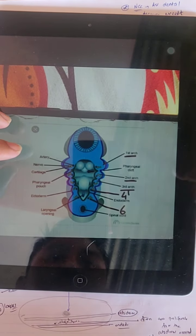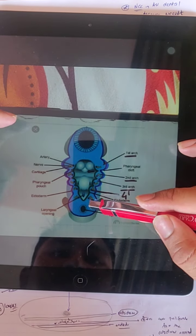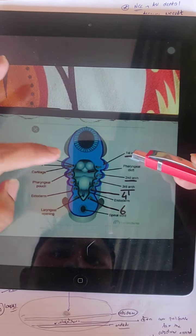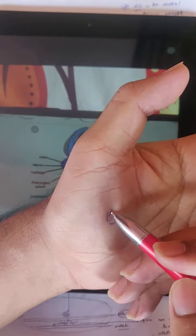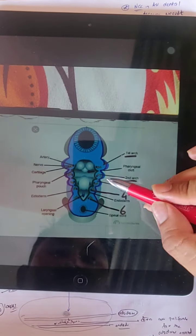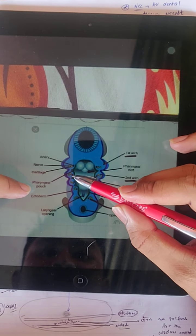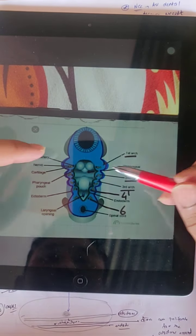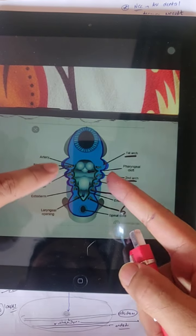Then the pharyngeal arch derivatives. The mesoderm is developed. The ectoderm is cleft. Ectoderm is cleft. Then the pharyngeal pouches. The pharyngeal arch has cartilage and muscle components.